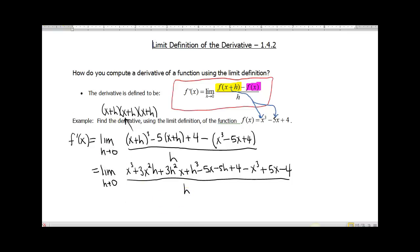Now comes the fun part. We get to start canceling some terms. I see an x³ and a -x³, those will wipe out. I see a -5x and a +5x, those will wipe out. And I see a +4 and a -4, those will wipe out.